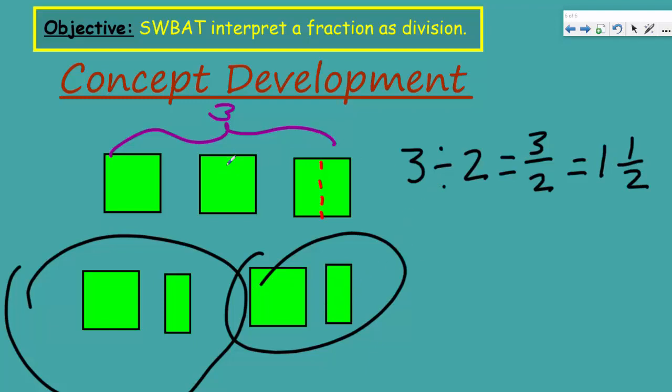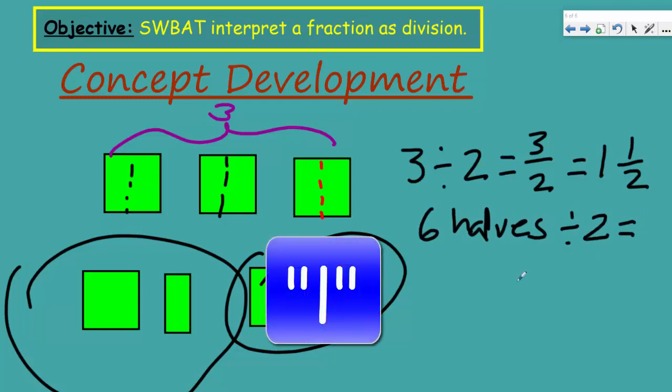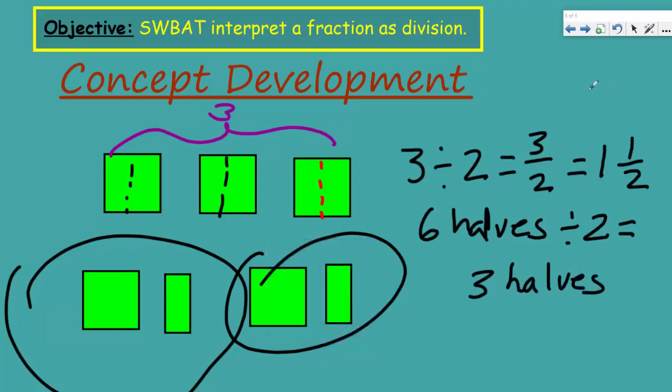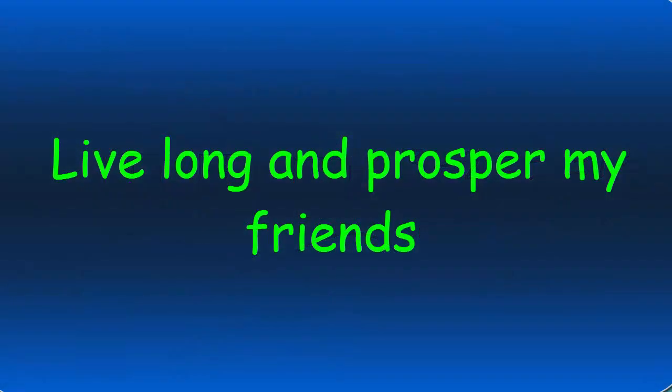Or if you will, if you want to divide all of this, this is another way of looking at the problem. We actually have one, two, three, four, five, six halves. Let's learn how to spell here. Six halves. Here we go. And we're going to divide that by two people. So that's going to equal three halves. Isn't that great? Yes. And you know what? That's it, my friends. So this video pretty simple, huh? Live long and prosper.